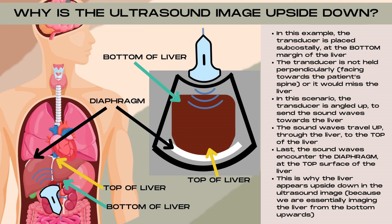In this scenario, the transducer is angled up to send the sound waves up towards the liver. So the sound waves are traveling upwards through the liver, from the bottom of the liver to the top portion of the liver. This is why the liver appears upside down in the ultrasound image — because we are essentially imaging the liver from the bottom of the liver to the top of the liver.